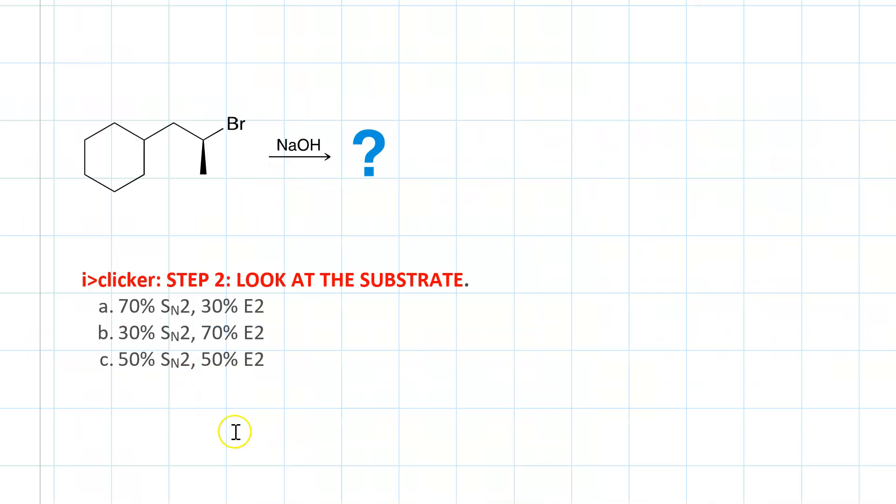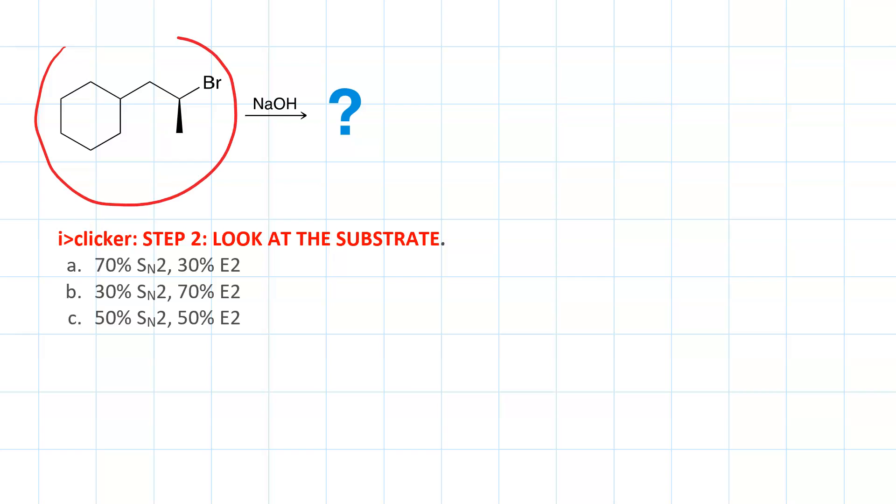Next step is to consider the substrate. Pause, work, resume. This is our substrate. It's a secondary alkyl halide. Going back to our table, the secondary alkyl halide can go via both SN2 and E2, but E2 is favored by approximately 70-30. So we'll get 70% E2 and we'll get about 30% SN2. Choice B.